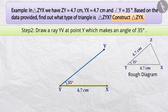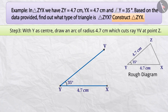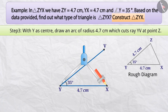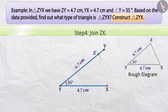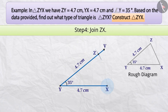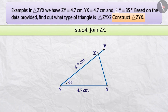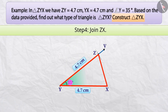The point Z must be somewhere on this ray YV. Step 3: The distance ZY has been given as 4.7 cm. Thus, point Z is at a distance of 4.7 cm from point Y. With Y as centre, draw an arc of radius 4.7 cm. It cuts ray YV at point Z. Step 4: Next, we will join points Z and X and draw the third side ZX, which completes the construction of the triangle. Thus, we have obtained triangle ZYX where ZY equals 4.7 cm, YX equals 4.7 cm, and angle Y equals 35 degrees.